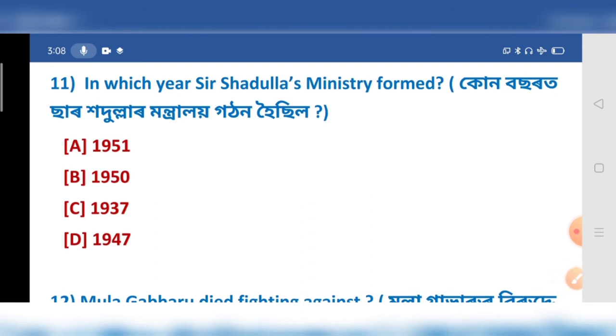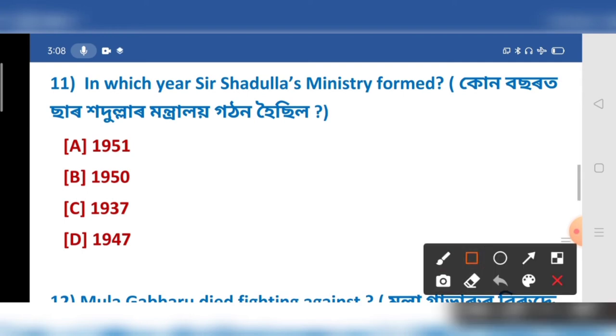In which year was the Saar Shadolaj ministry formed? Here option number — Diobo Huddotar, 1937.